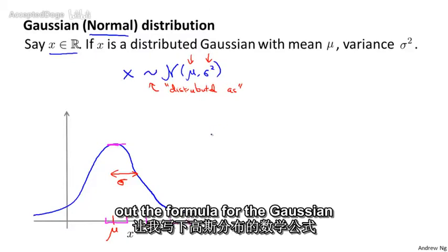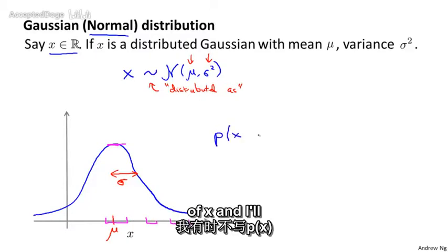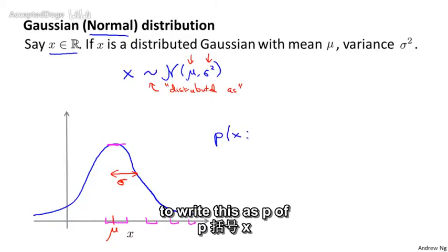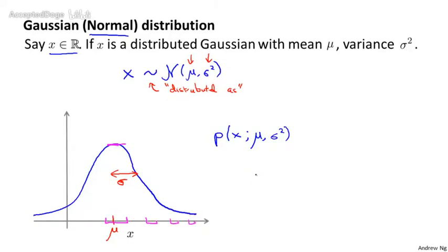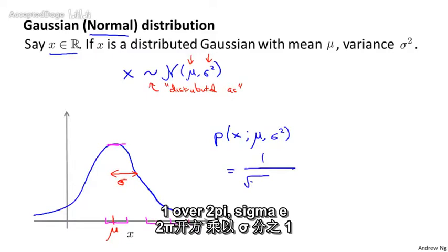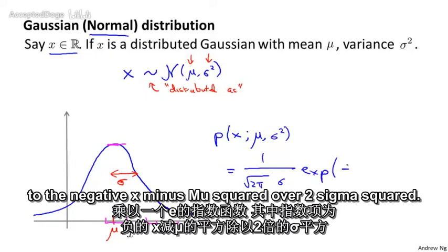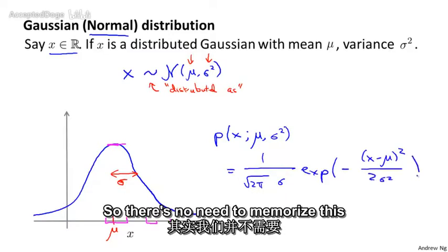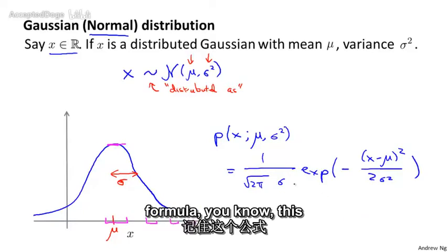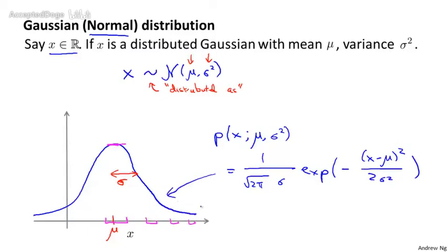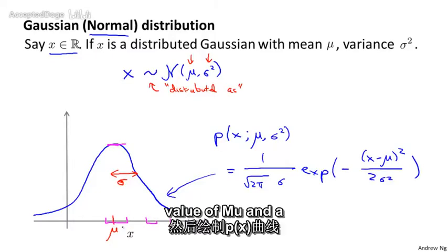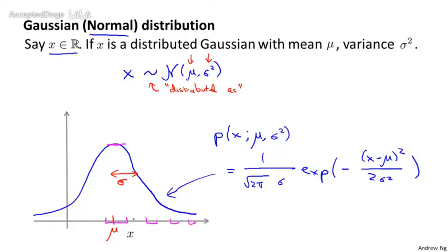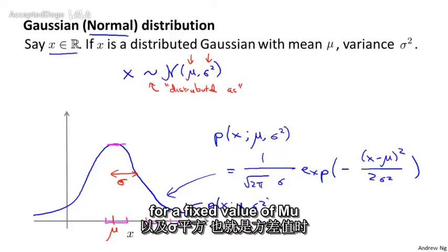Let me write out the formula for the Gaussian distribution. The probability of x — written as p of x semicolon mu comma sigma squared — denotes that the probability of x is parameterized by mu and sigma squared. The formula for the Gaussian density is: 1 over root 2 pi sigma, times e to the negative x minus mu squared over 2 sigma squared. There's no need to memorize this formula; you can always look it up. This is what you get if you take a fixed value of mu and sigma and plot p of x as a function of x.